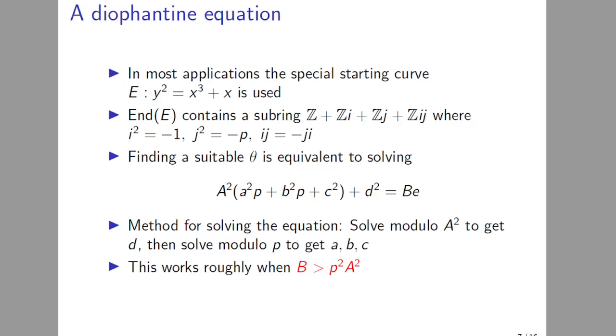But in many applications, or actually most applications, a special starting curve is used, y^2 = x^3 + x, which has a very particular endomorphism ring which is known and has a special structure. Namely, it contains i and j with the property that i^2 = -1, j^2 = -p, j is actually just the Frobenius, and i∘j = -j∘i.